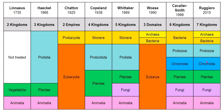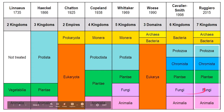In our previous video on the domains of life, we have already discussed domain archaea and domain bacteria. So in this case, they are treated as two separate kingdoms. In this video, we will focus on the remaining five eukaryotic kingdoms: protozoa, chromista, plantae, fungi, and animalia.